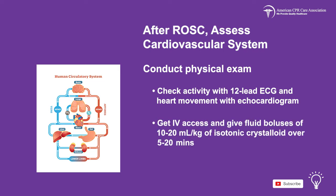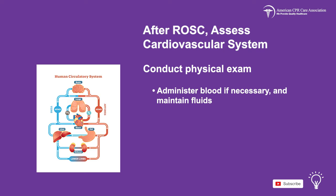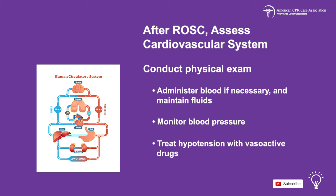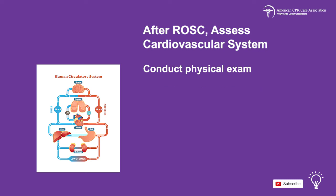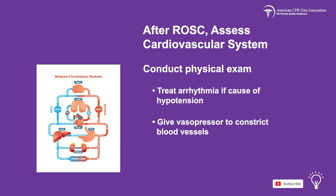Get vascular access and give fluid boluses of 10 to 20 milliliters per kg of isotonic crystalloid over 5 to 20 minutes. Administer blood if necessary and maintain fluids. Monitor the child's blood pressure. Treat hypotension with vasoactive drugs and treat any arrhythmia if they are the cause of hypotension.